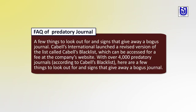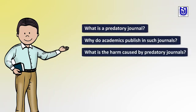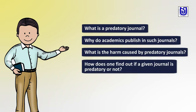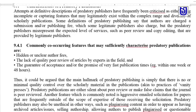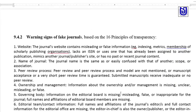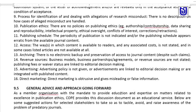FAQ on predatory journals: What is a predatory journal? Why do academics publish in such journals? Because of publication pressure. What is the harm? Publishing in predatory journals gives no academic credit, and you lose money, appreciation, and prestige. How do you identify a predatory journal? Check the relevant links. Characteristics to look for include the journal's name, review process, ownership, editorial board, author fees, and hidden clauses — there are 16 such warning signals to check in the course material.